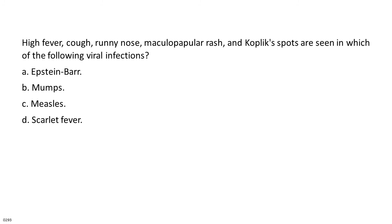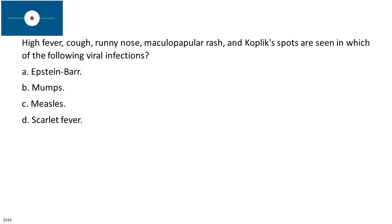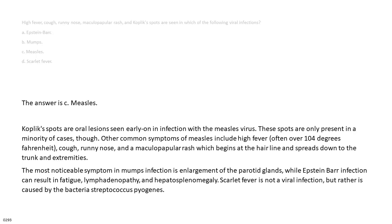High fever, cough, runny nose, maculopapular rash, and Koplik spots are seen in which of the following viral infections? A. Epstein-Barr. B. Mumps. C. Measles. D. Scarlet fever. The answer is C. Measles. Koplik spots are oral lesions seen early on in infection with the measles virus, though present in only a minority of cases. Other common symptoms include high fever (often over 104°F), cough, runny nose, and a maculopapular rash which begins at the hairline and spreads down to the trunk and extremities. The most noticeable symptom in mumps is enlargement of the parotid glands. Epstein-Barr infection can result in fatigue, lymphadenopathy, and hepatosplenomegaly. Scarlet fever is not a viral infection but is caused by the bacteria Streptococcus pyogenes.